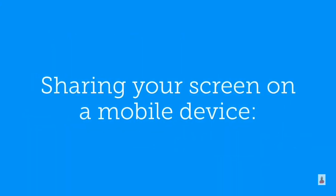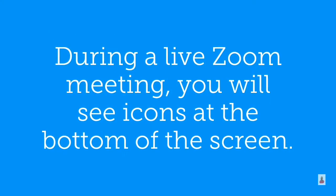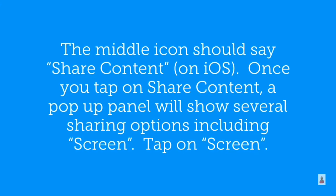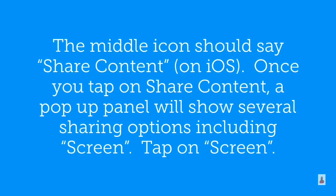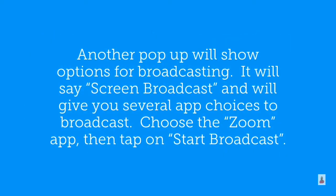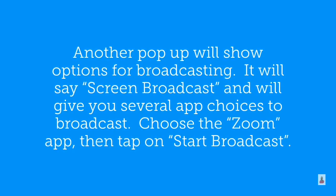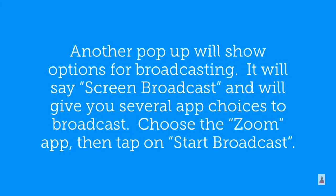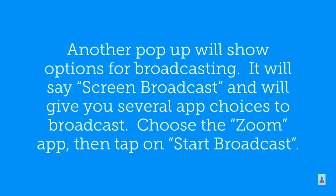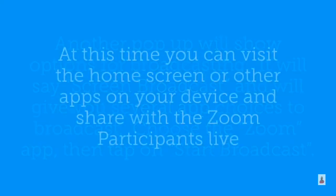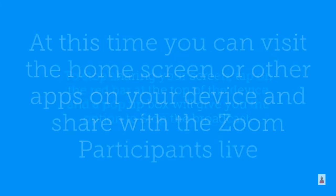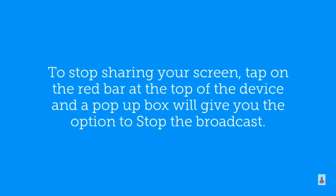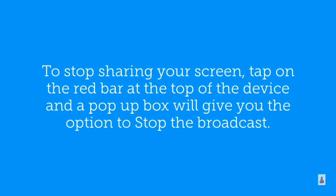Sharing your screen on a mobile device: during a live Zoom meeting, you will see icons at the bottom of the screen. The middle icon should say share content on iOS. Once you tap on share content, a pop-up panel will show several sharing options including screen. Tap on screen. Another pop-up will show options for broadcasting — it will say screen broadcast and give you several app choices. Choose the Zoom app, then tap on start broadcast. You can then visit the home screen or other apps on your device and share with the Zoom participants live. To stop sharing, tap on the red bar at the top of the device and a pop-up box will give you the option to stop the broadcast.